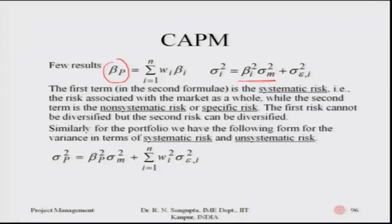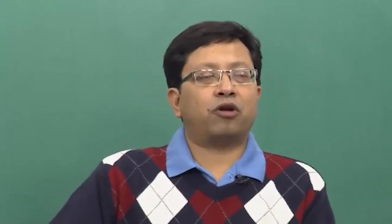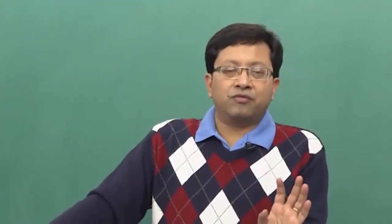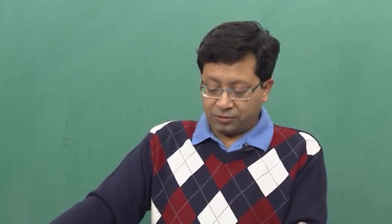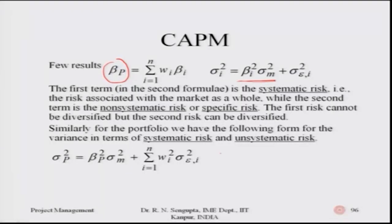The first term in the formula is the systematic risk — the risk associated with the market or the overall portfolio — while the second term is the non-systematic risk, which can come from factors like political uncertainty in a region where you are building a bridge, a stadium, or an oil rig platform. The first risk cannot be diversified, but the second risk can be diversified and made as low as possible depending on how you invest.